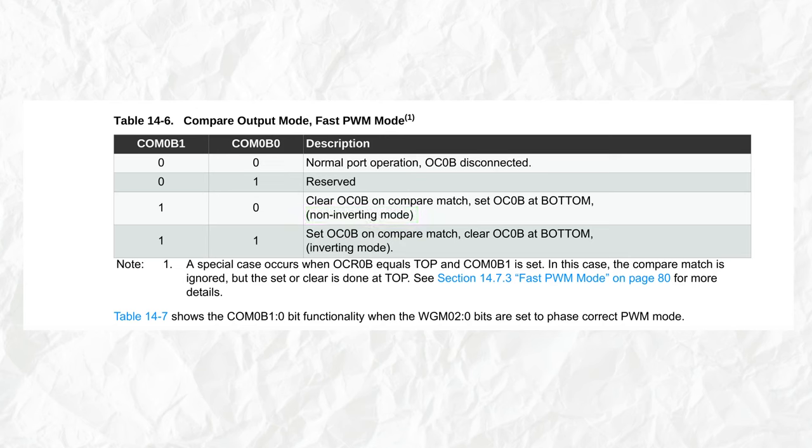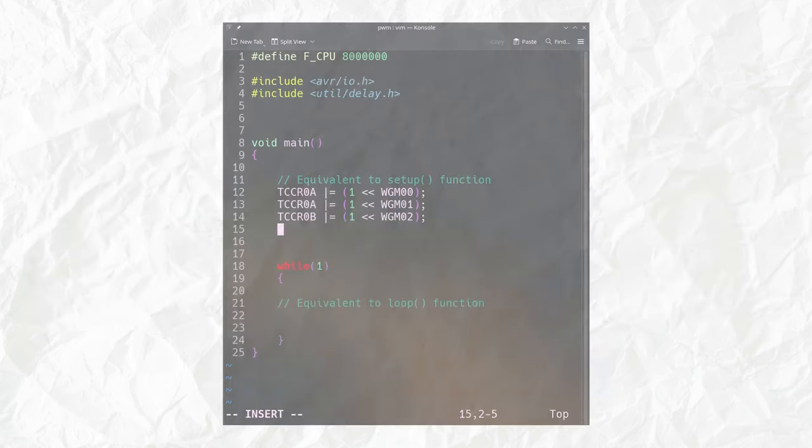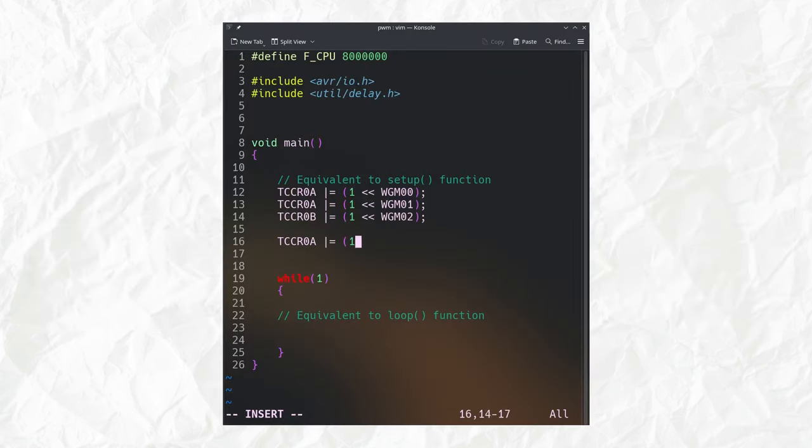And this means that the duty cycle is going to be proportional to the value stored in the output compare zero B register. This will just make everything more intuitive. So we can go ahead and add this to the code as well.